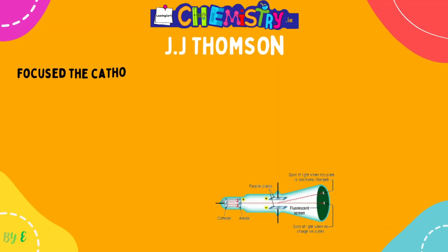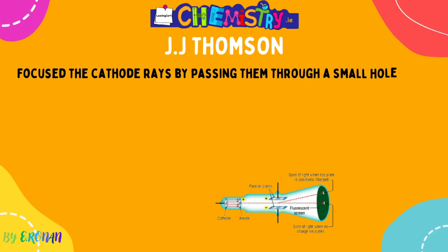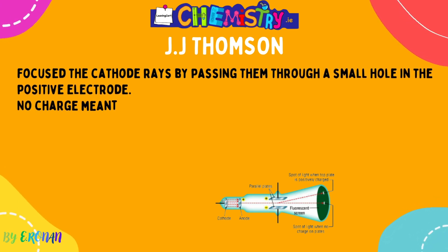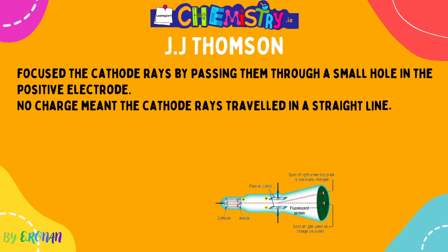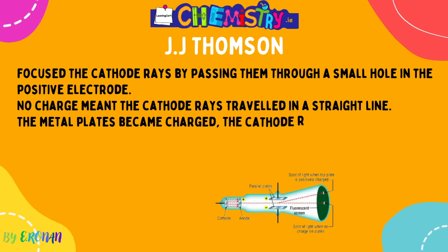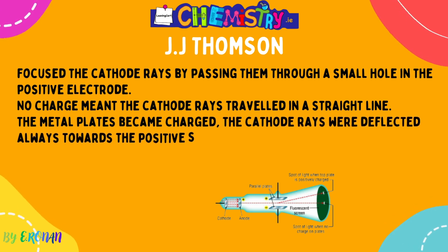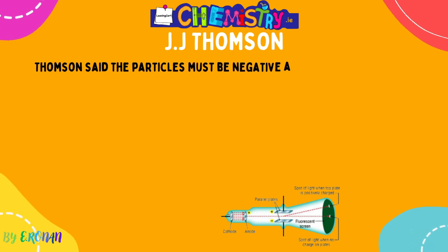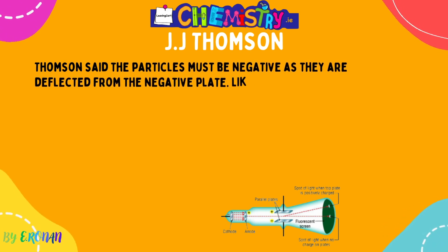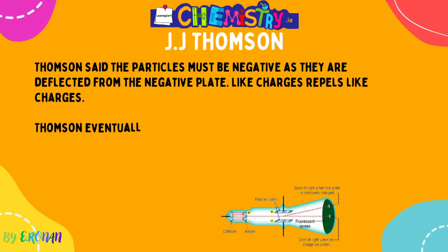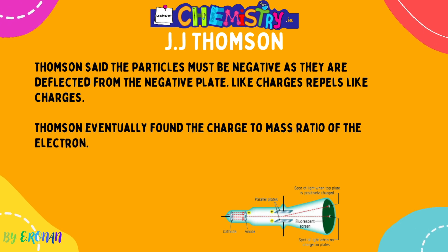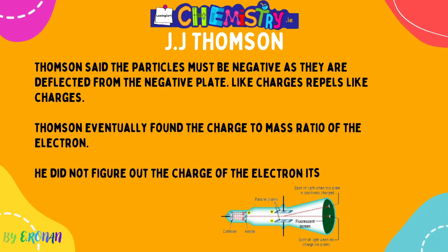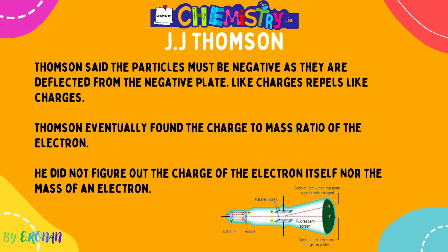Next we move on to JJ Thomson, who focused cathode rays by passing them through a small hole in the positive electrode. With no charge applied, the cathode rays travelled straight through, causing the glass to fluoresce. However, when he placed metal charged plates — positive above, negative below — the cathode rays were deflected towards the positive plate. Thomson concluded that the particles must be negatively charged, as they deflected away from the negative plate and towards the positive plate. He found the charge-to-mass ratio of the electron, but not the charge itself nor the mass individually — the ratio only.